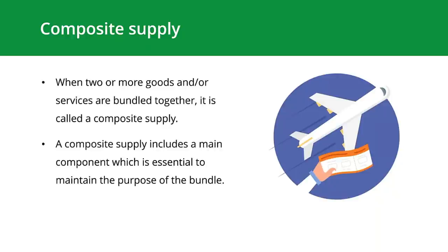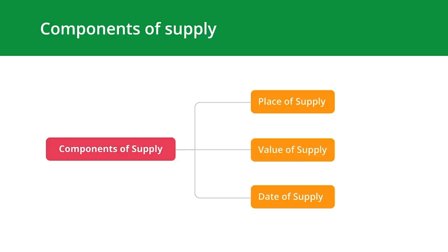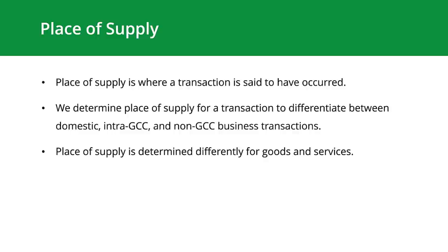Now let's move on to the most important part of the webinar: the components of supply. There are three components of supply, and it's very important to know about them to claim your input VAT correctly and file your returns without any hassle. Place of supply is where a transaction is said to have occurred, and we determine place of supply to differentiate between domestic, intra-GCC, and non-GCC business transactions. Place of supply is determined differently for goods and services.